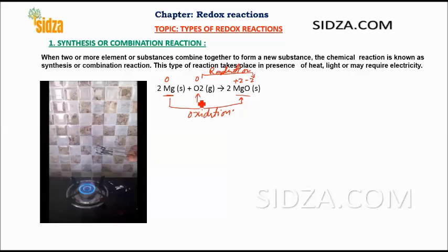We can also call it a synthesis reaction because two substances combine and form one new substance — magnesium and oxygen combine to form magnesium oxide.